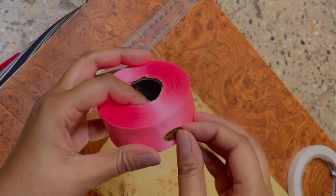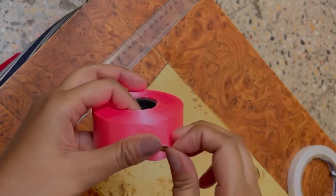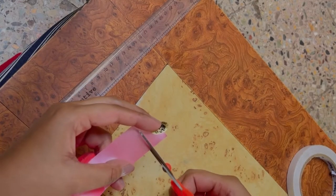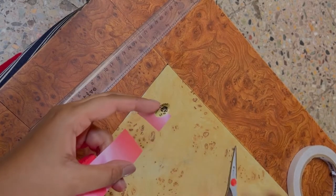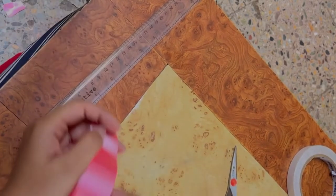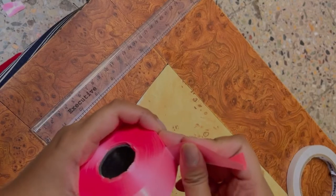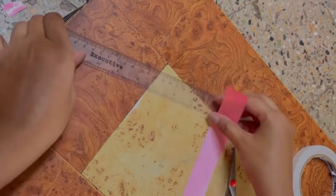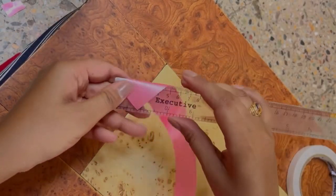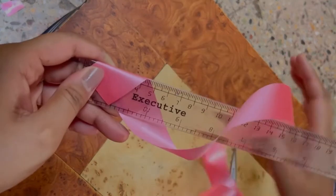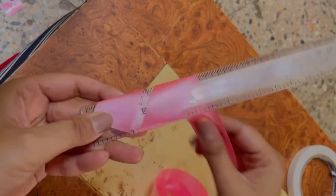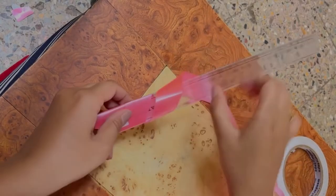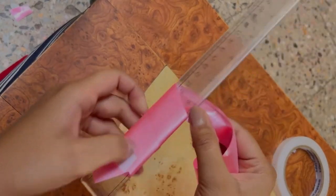So let's make our ribbon rose. First, you have to tie it from one side. You can put tape here, like I have put it here. After that, you can easily wrap it around the scale.